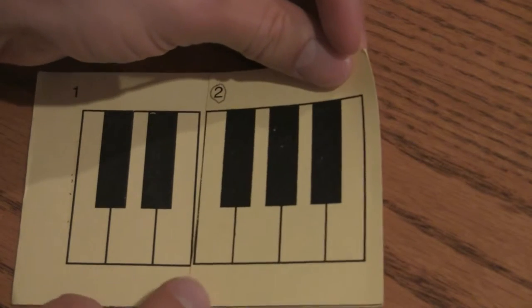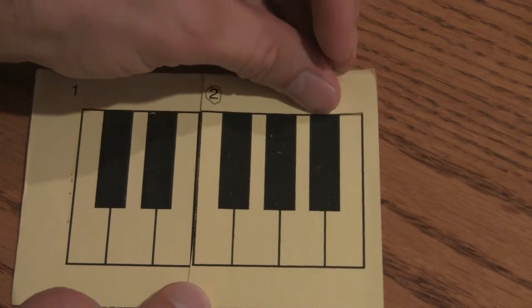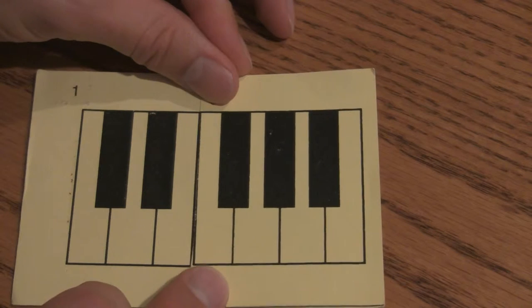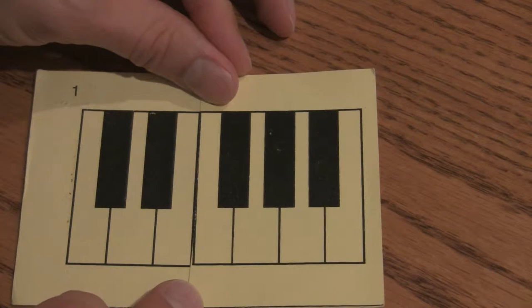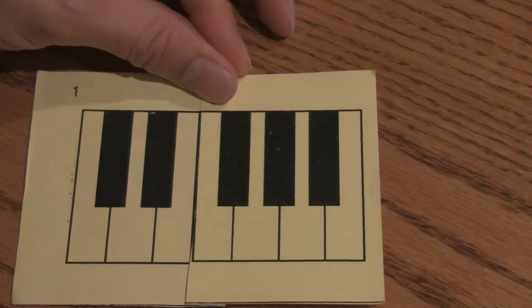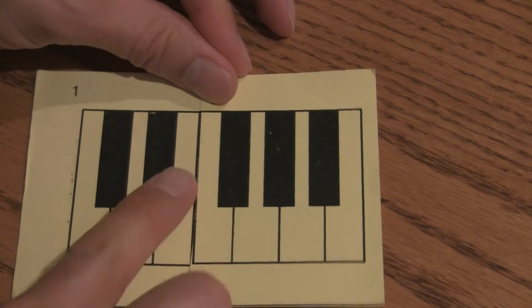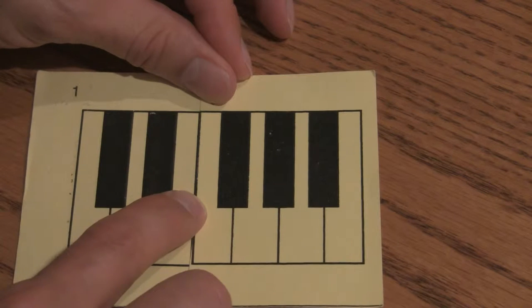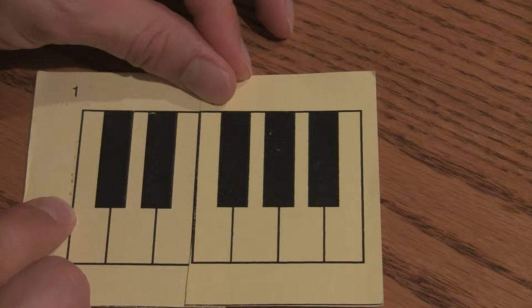We can tell these notes apart by the groups of two and three. An organ has a keyboard for the feet, and that keyboard is much larger than the keyboard for the hands. And in order to find your way around the pedalboard, that's the keyboard for the feet, you learn to feel the gap where the black note is missing here and the black note is missing here.